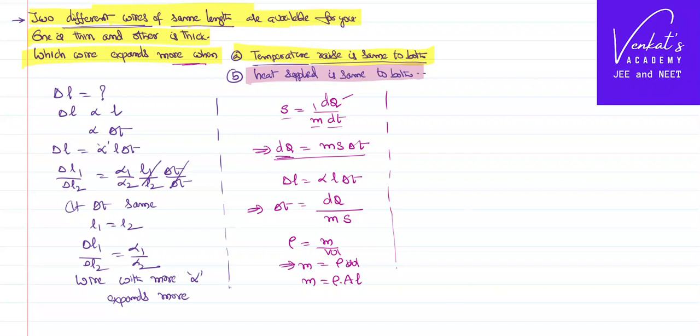Substituting this value of the mass in this equation, ΔT will be dQ by in the place of the mass what I will write is density of the material, area of cross section and length and then specific heat. That is ΔT equals dQ by ρALs. Now I know the value of ΔT. I will substitute ΔT in this formula.